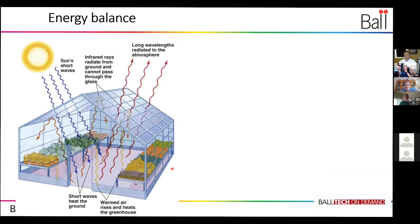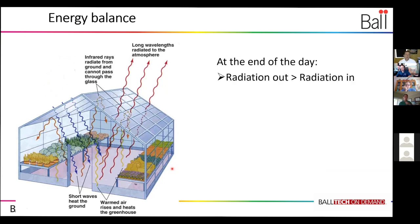But at the end of the day when you take away the sunlight, there isn't any new radiation coming into the greenhouse anymore. So then the balance starts to change. Then the outgoing radiation will become bigger than the incoming.